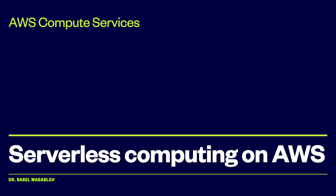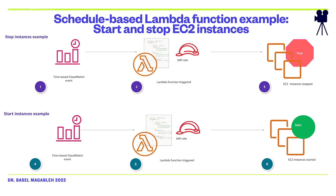Consider an example: you want to reduce the cost of your Amazon EC2 usage. You decide to stop instances at a predefined time — for example, at night when no one is accessing them — and then start the instance back up in the morning before work starts. In this situation, you could configure AWS Lambda and Amazon CloudWatch Events to accomplish this functionality.